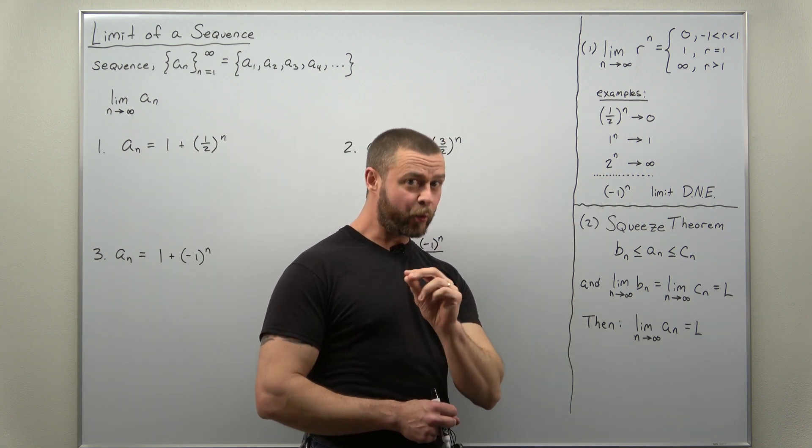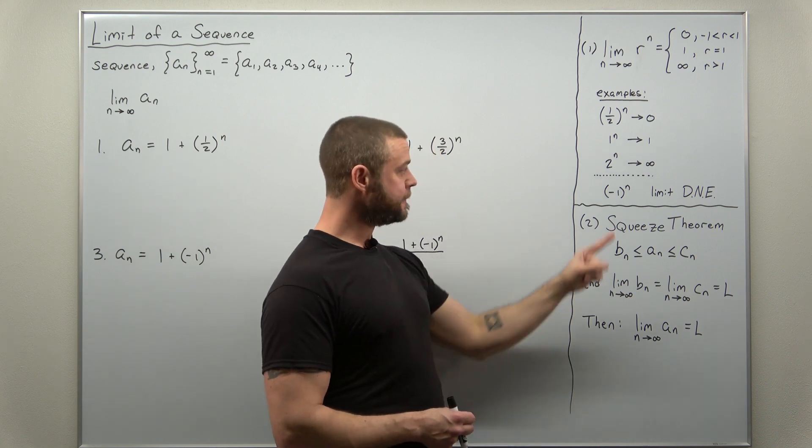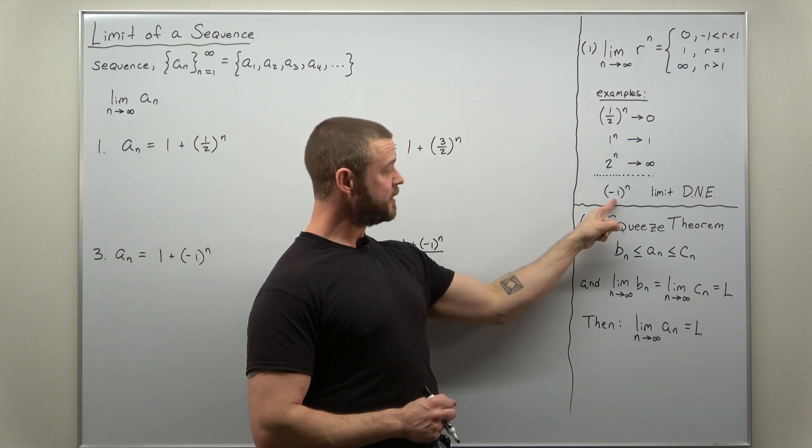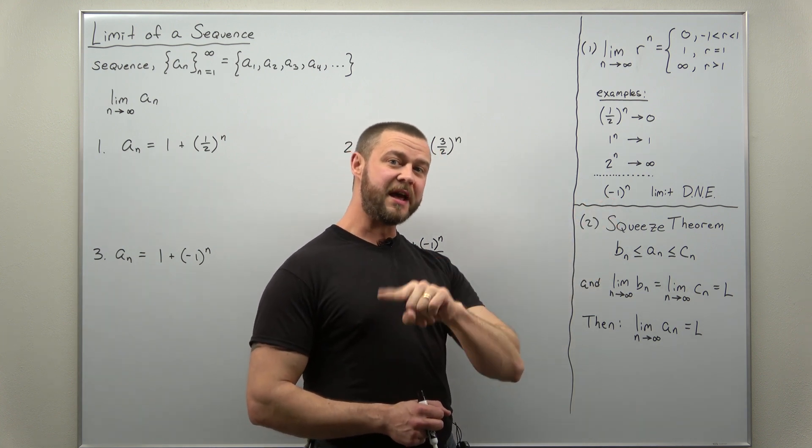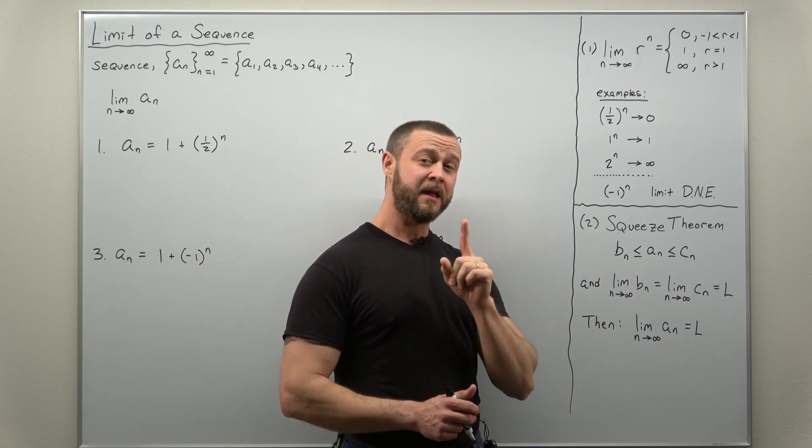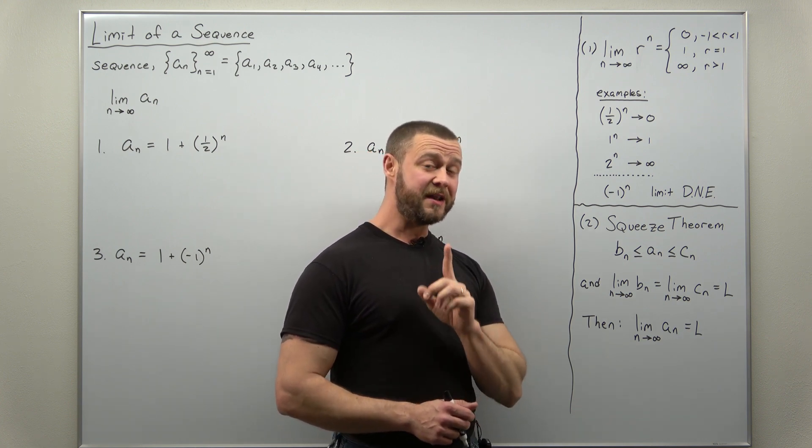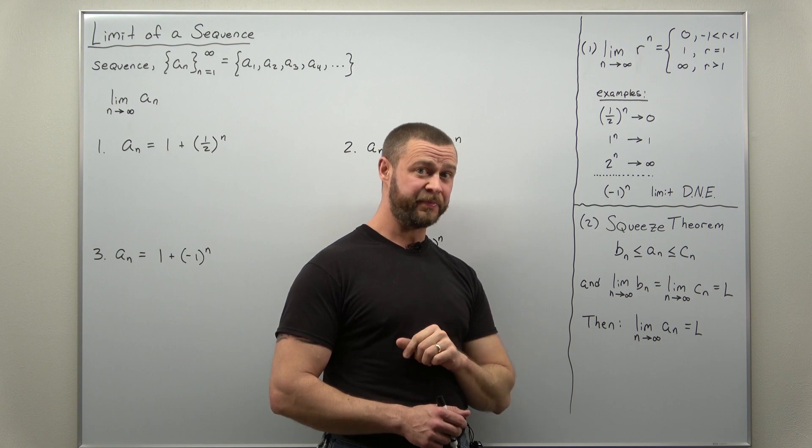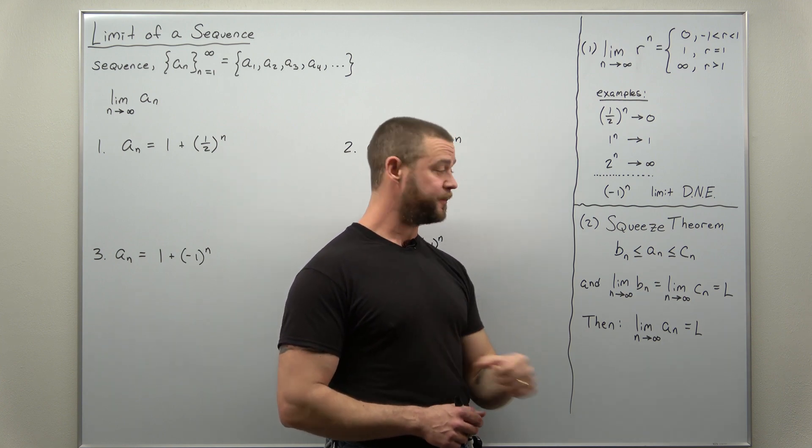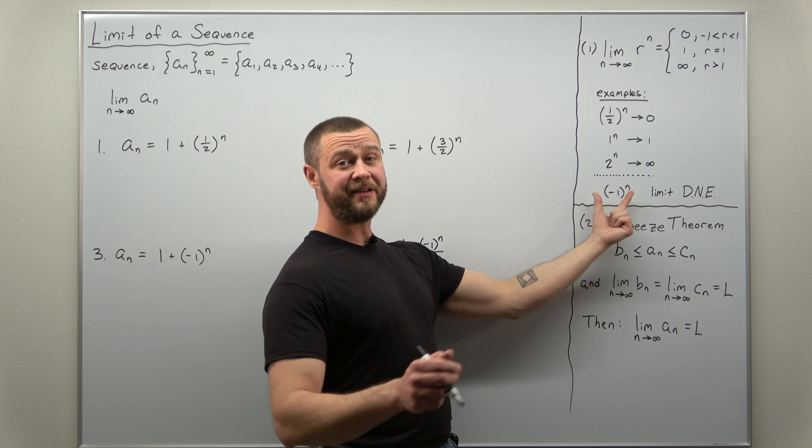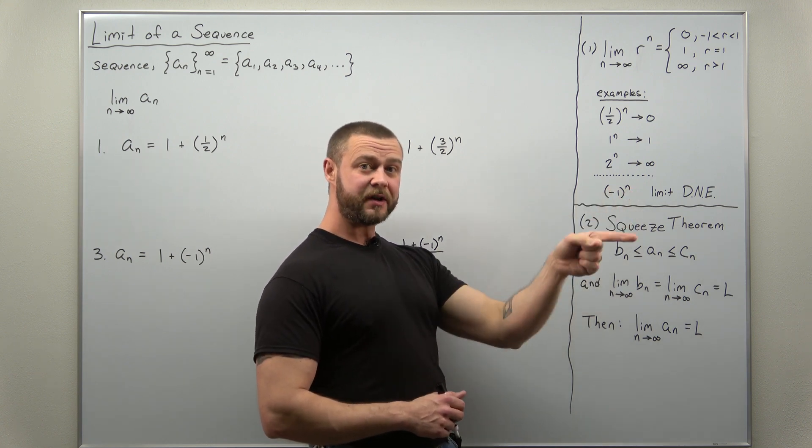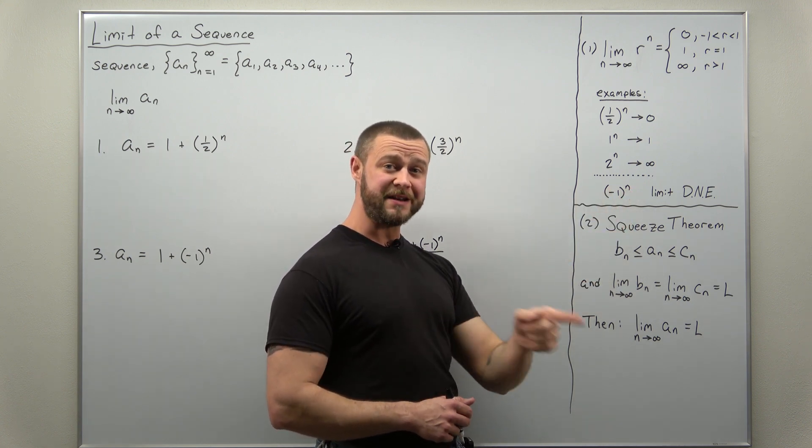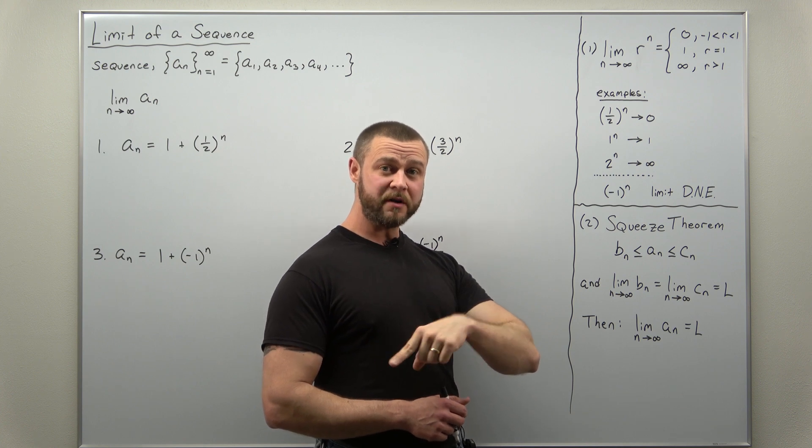Now there is a fourth different possibility. If r is negative one, think of what happens to negative one raised to powers. Negative one to an even power is positive one. Negative one to an odd power is negative one. This term, negative one to the n, it's going to keep bouncing back and forth between negative one and positive one forever.